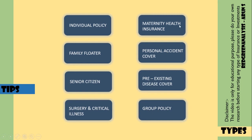This brings us to personal accident cover. If you have a risky job — for example, bike riders or people in high-risk occupations — there are high possibilities of accidents. If you have an accident resulting in disability, you can claim money under this policy and the amount can be reimbursed.